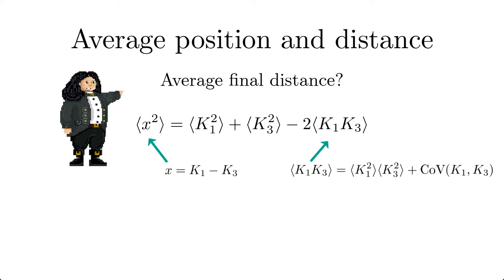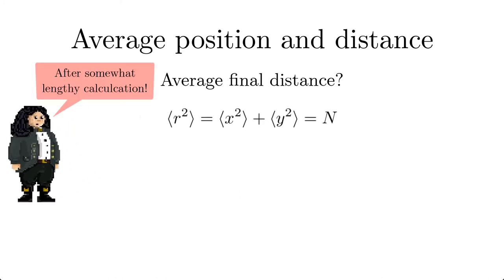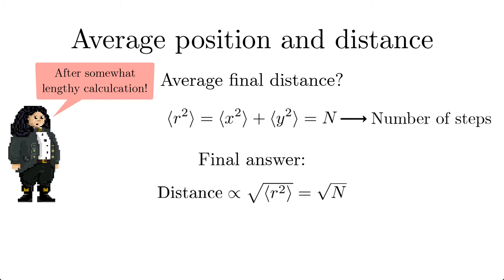We can split the random variable k into mean plus fluctuation. So the mean squared distance is equal to the number of steps. Therefore, the answer to Bernoulli's question is the mean distance is given by the square root of the number of steps.